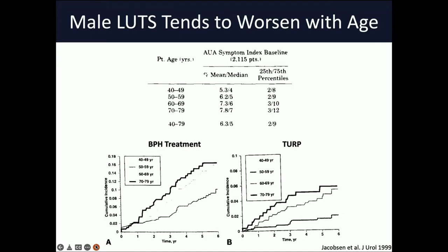What does that mean for lower urinary tract symptoms? If we look at studies that have followed men and their LUTS over long periods of time, we can see that AUA symptom scores or IPSSs tend to worsen as men get older — this is urologic dogma, as we all know. In line with this, the likelihood of needing BPH treatment also worsens with age, and the same goes for the likelihood of needing a TURP. So this sets up a nice correlation where prostate size gets bigger with age, as does the worsening of lower urinary tract symptoms and the need for ultimate surgical treatment of BPH.